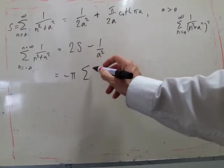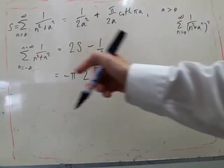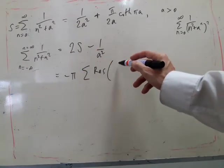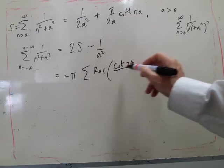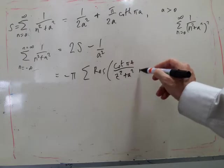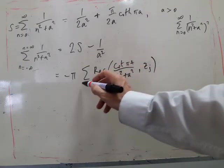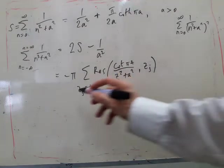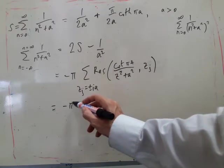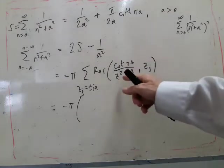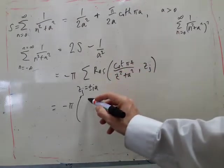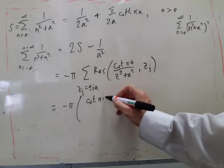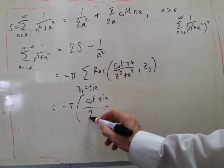We've got residue of, so F in this case is, now we're talking about Z. So F is 1 over Z squared plus A squared, and we're multiplying that by cot pi Z. So it's cot pi Z over Z squared plus A squared, and we're evaluating it at Zj, and Zj is just plus or minus iA. Using the usual P over Q dashed rule, we'll get cot pi iA, I'll do the plus iA first, divided by 2Z, so 2 times iA.